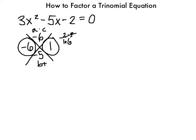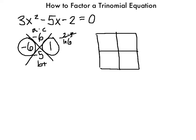I'm going to put those numbers in my box along with the first and last terms of the original trinomial. The first and last terms go in the first and last boxes of the box method. So we'll have 3x squared and negative 2 in those positions. The values from the X-factor — negative 6x and 1x — go in the other two boxes, since they have to add up to give us the middle x term.